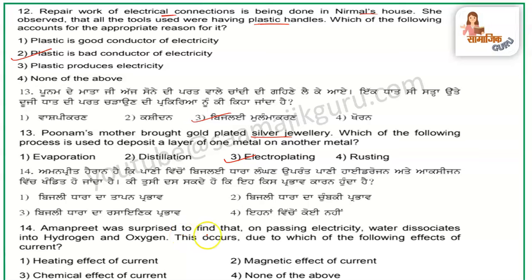Amanpreet was surprised to find that on passing electricity, water dissociates into hydrogen and oxygen. This occurs due to the chemical effect of current. So the third option is the chemical effect.